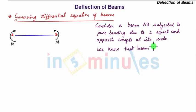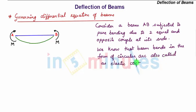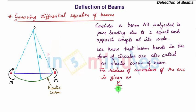We know that beam bends in the form of circular arc also called as elastic curve of beam. The radius of curvature of the arc is given as M by I is equal to E by R, where R is your radius of curvature of the beam.